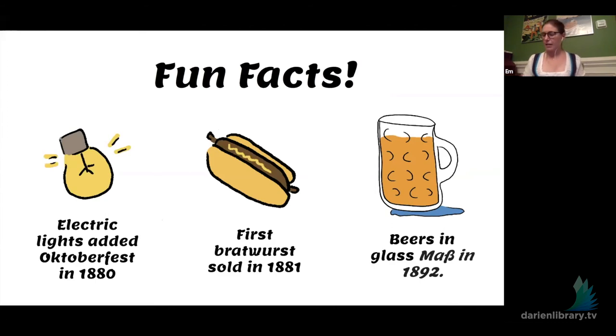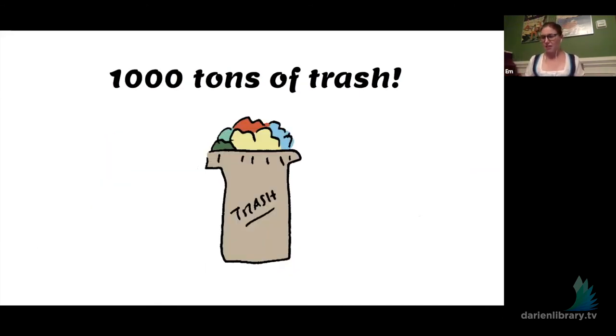Some fun facts. They added electric lights in 1880 to the Oktoberfest. And the first bratwurst was served just a year later. Bratwurst is a more of a modern sandwich. So the first bratwurst was served in 1881. And then the first glass beer mug was 1892. Industrial glassmaking started around like 1850 or so, but didn't really pick up until like the late 19th century. So before, in the mid 19th century, everyone would be drinking out of these earthenware mugs or steins.